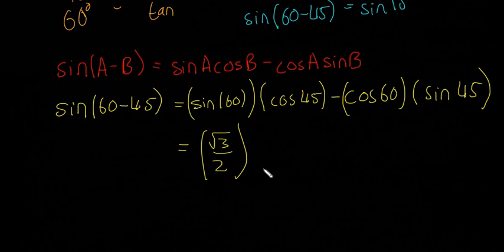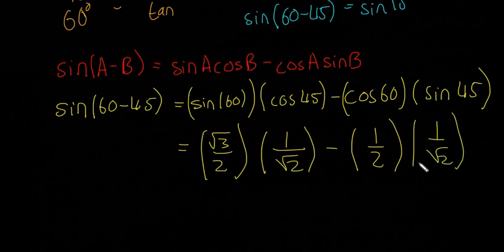Root 3 over 2, this one's going to be 1 over root 2, and it's going to be minus a half multiplied by 1 over root 2. That's just sticking those together.